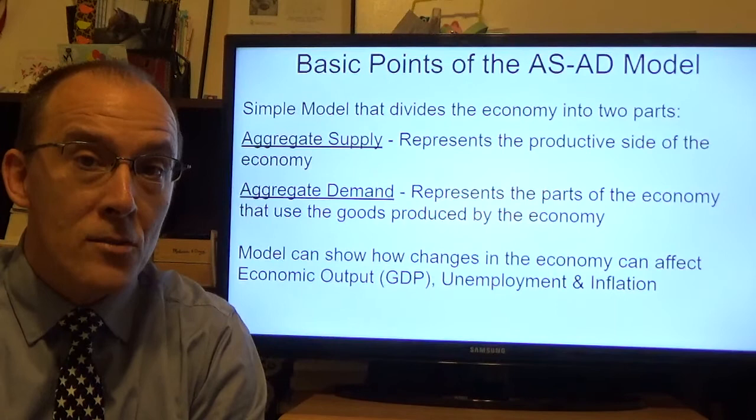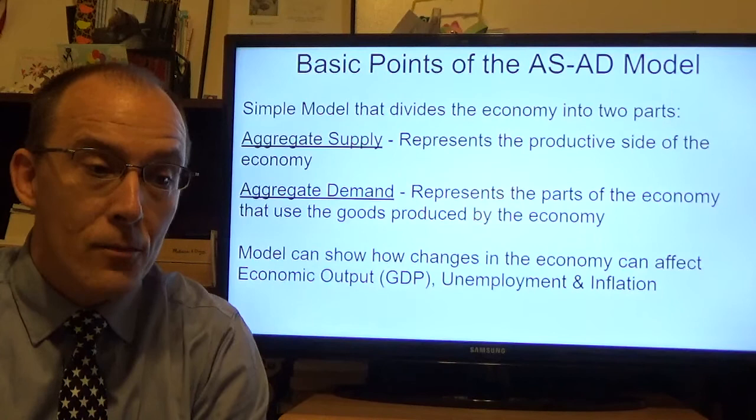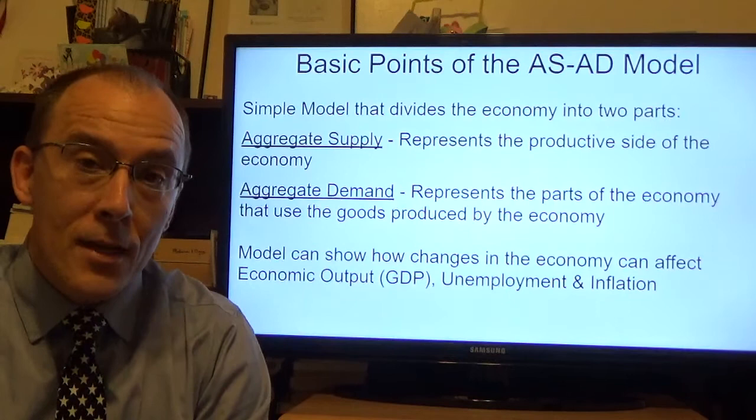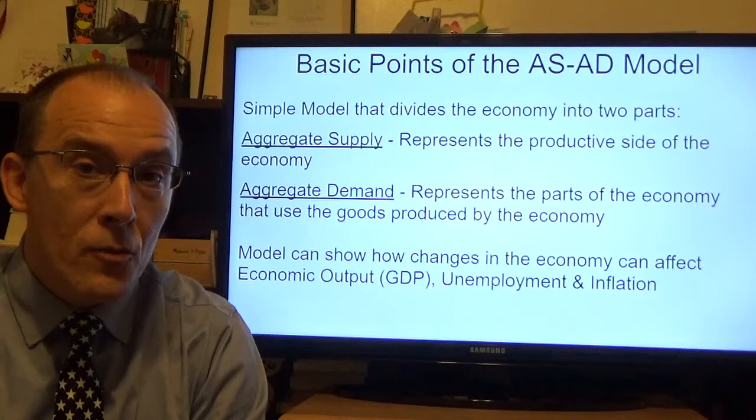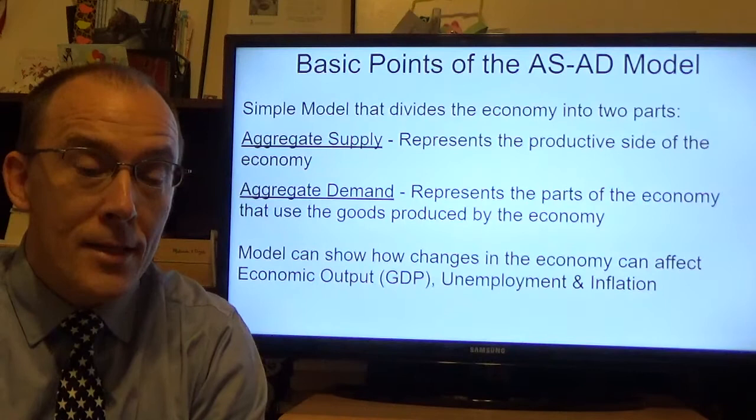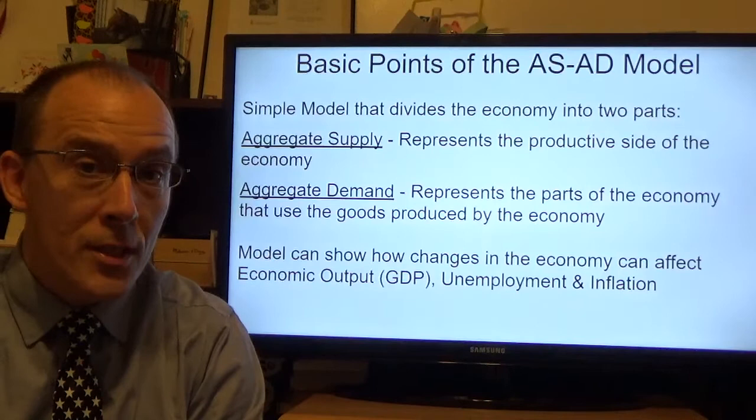Basically this model divides the economy into two sides. One is the aggregate supply side which represents the productive side of the economy. The other side is the aggregate demand side of the economy, representing all the parts of the economy that use resources. This model allows you to track the main macroeconomic indicators such as economic output, better referred to as GDP, unemployment, and inflation.